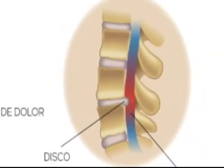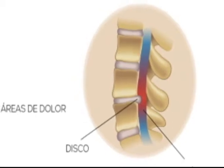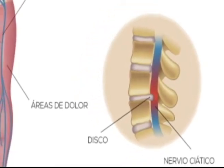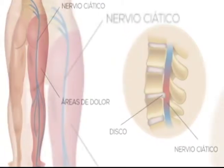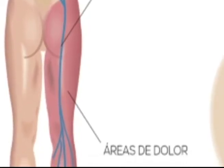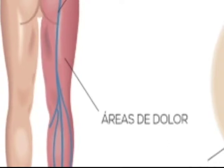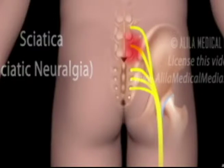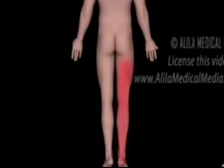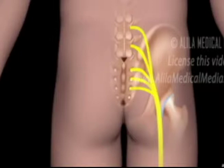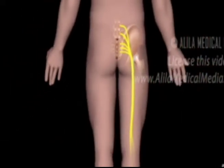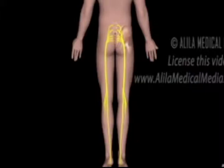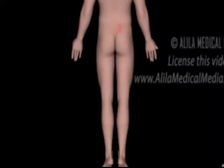Nervio siático: El nervio siático es el mayor nervio del cuerpo humano, formado por varias terminaciones nerviosas que provienen de la columna vertebral. Tiene su inicio al final de la columna, pasando por los glúteos y la parte posterior del muslo. Cuando llega a la rodilla se divide en el nervio tibial y fibular común, llegando hasta los pies. La ciática se produce frecuentemente cuando una hernia de disco, un espolón óseo en la columna vertebral o un estrechamiento de la columna comprimen parte del nervio, causando inflamación, dolor y entumecimiento de la pierna afectada.